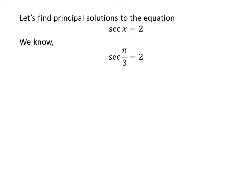We know the value of secant of pi upon 3 is 2. We also know the value of secant of x repeats after the interval of 2 times pi, so secant of 2 times pi minus a is equal to secant of minus a. Furthermore, the trigonometric identity states that secant of minus a is equal to secant of a.